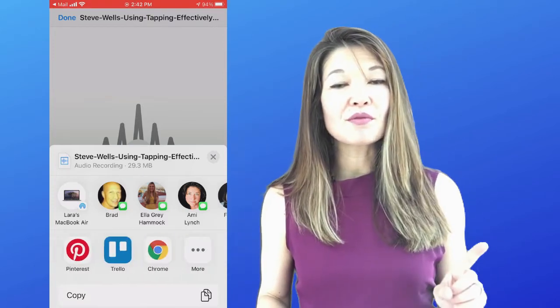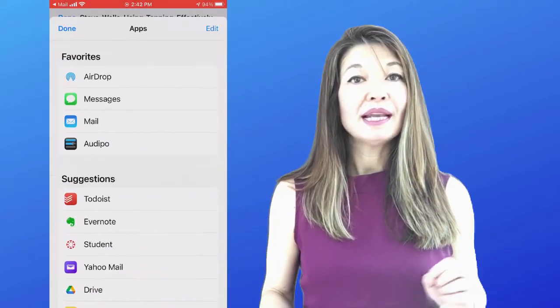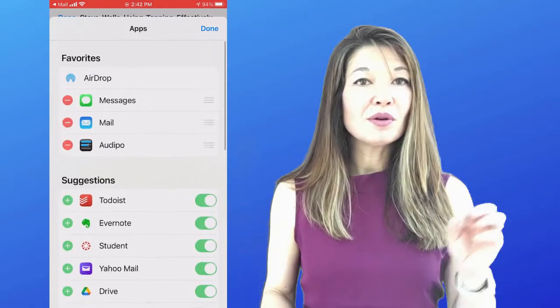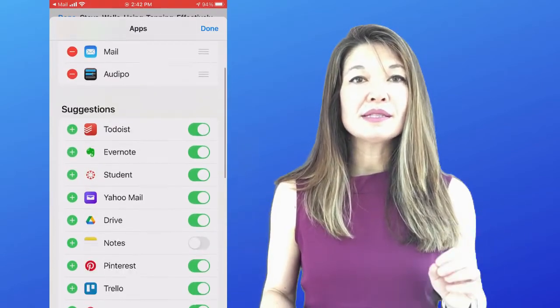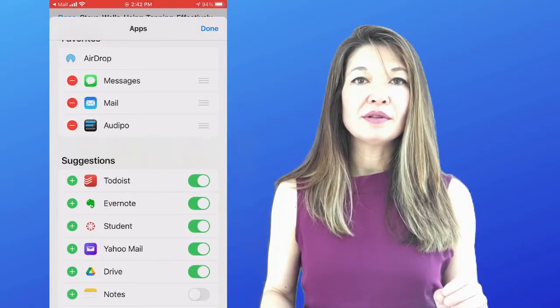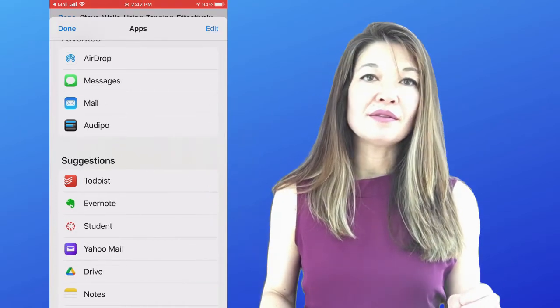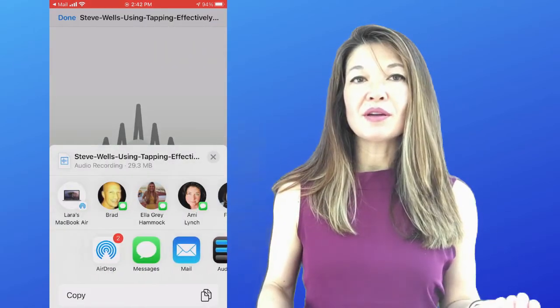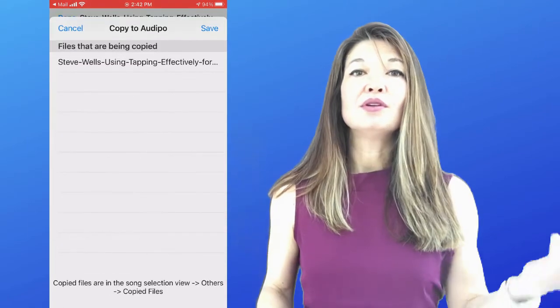To do this scroll all the way over to the right and hit more. Hit edit, find Audipo in your list and press the plus sign to add it to your share sheet. Now you can choose that app and hit save. I'm not sure why it doesn't automatically take me to the app but go into the app and select the file that you want to listen to.